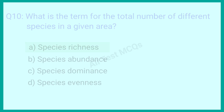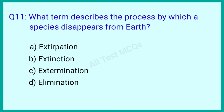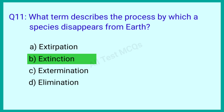Question number 11: What term describes the process by which a species disappears from the earth? The correct answer is option B: Extinction.